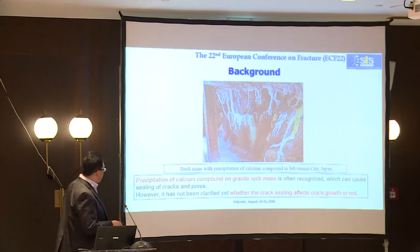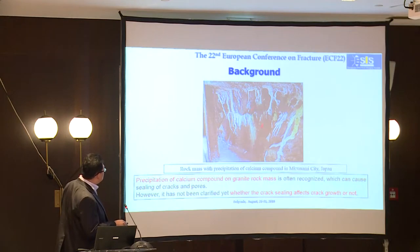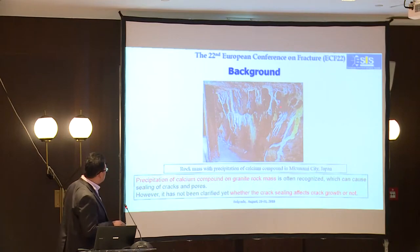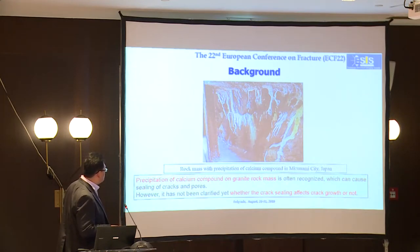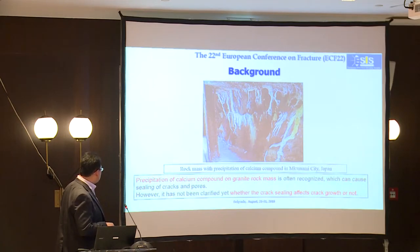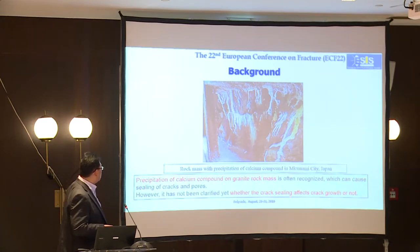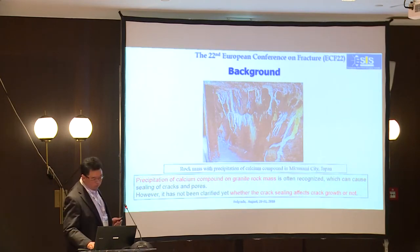Here I show a photo taken in the underground. This is the rock mass, and the white color shows the precipitation of calcium compound — this is chalk, calcium carbonate. The precipitation of calcium compound on the sandstone rock mass is often recognized. And it can cause a seeding of crack growth in rock. However, it has not been clarified whether the precipitation of calcium compound affects crack growth or not.